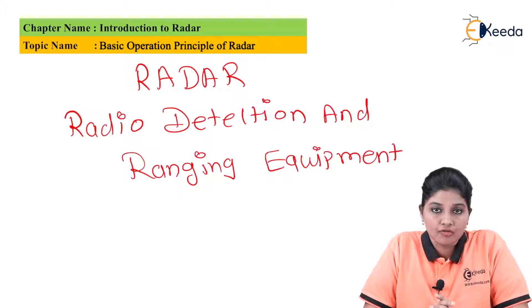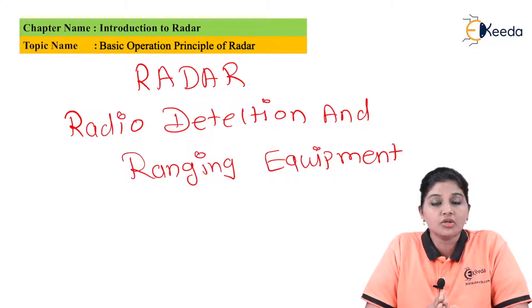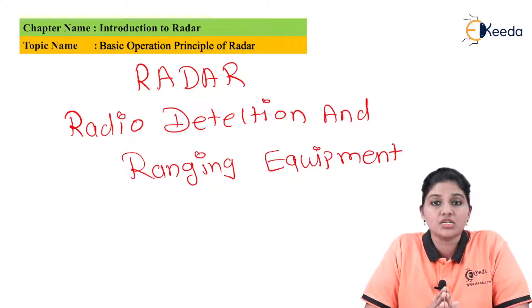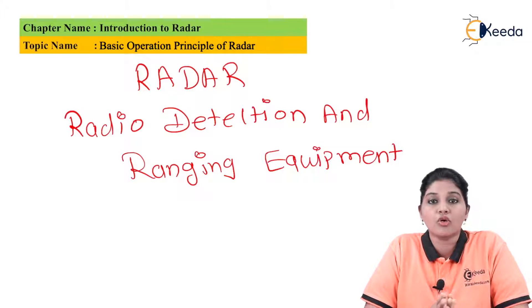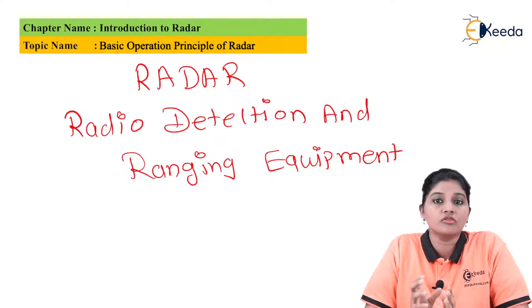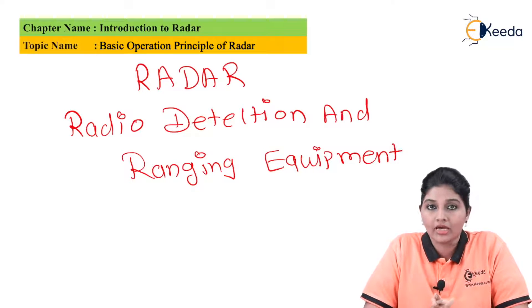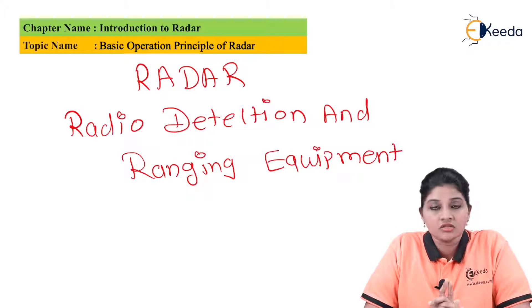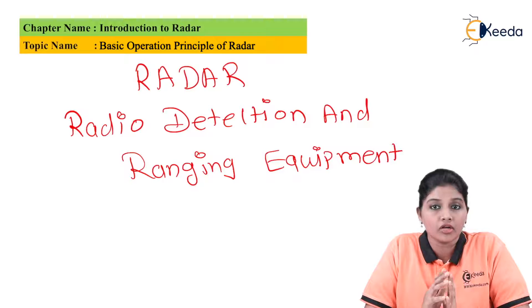Moving to the basic principle of radar operation: radar is basically an electromagnetic system used for detecting and locating reflecting objects. The object may be a spacecraft, an aircraft, a moving vehicle, a person, or a moving animal. Radar operates on the principle of transmitting a signal and receiving it back in the form of an echo. It is important that the target has good capability to reflect the signal back to the transmitter, so the transmitter can detect the position of the object.